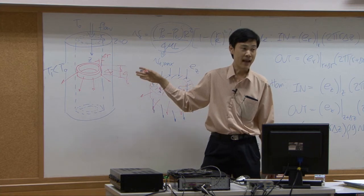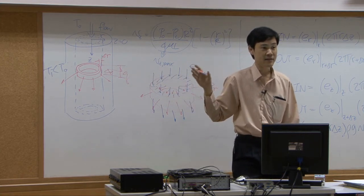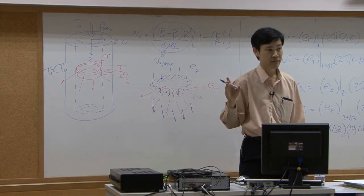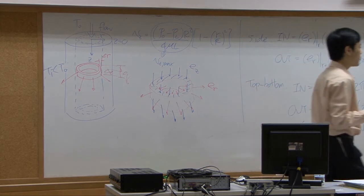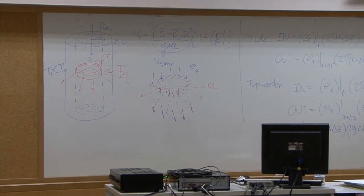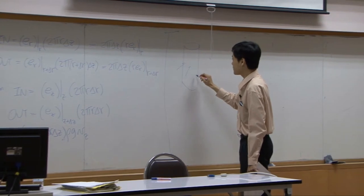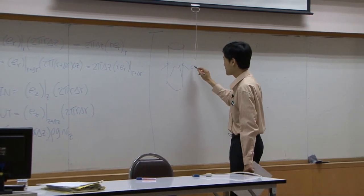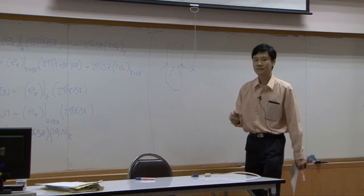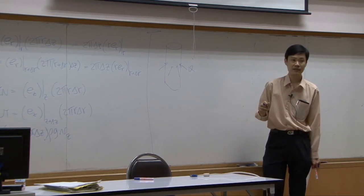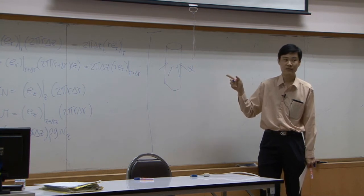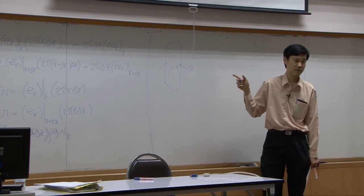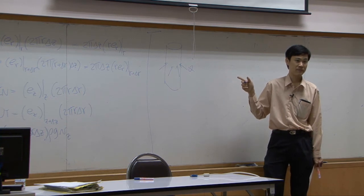so that means there will be heat flux supplied on the surface of the pipe into the system. In that case, does it count as the energy production? Suppose I have a pipe and I heat it up by providing the flux of heat. If I supply like that, do you need to incorporate the energy production term?